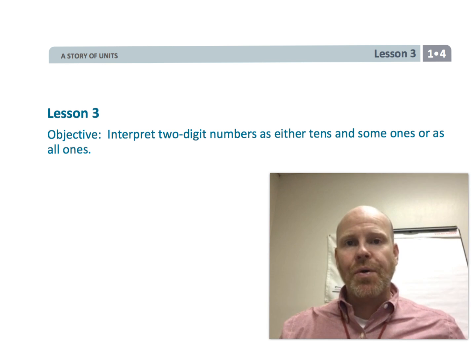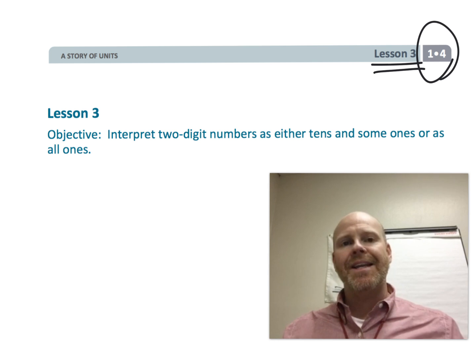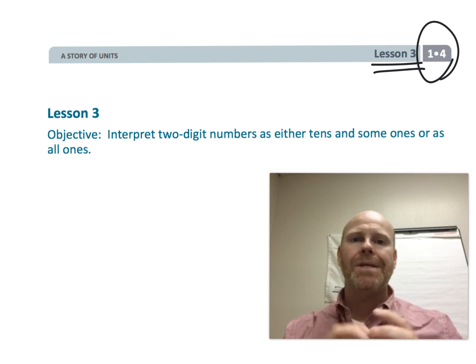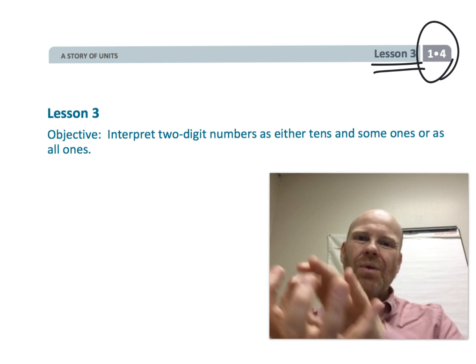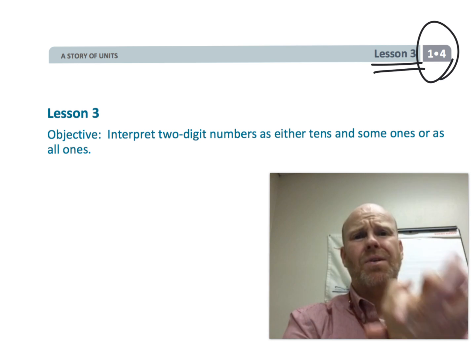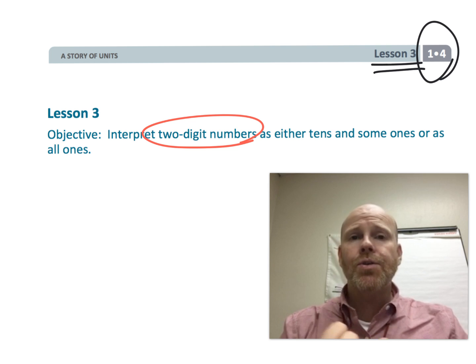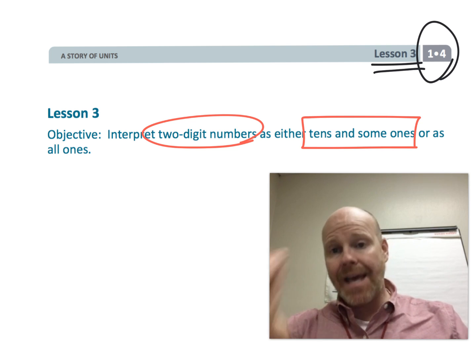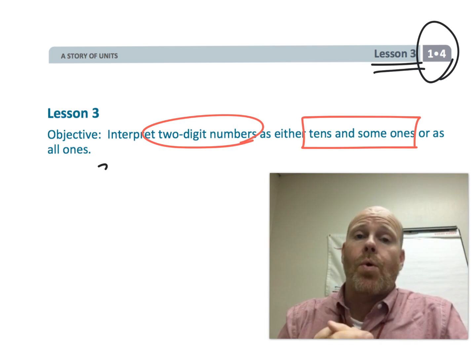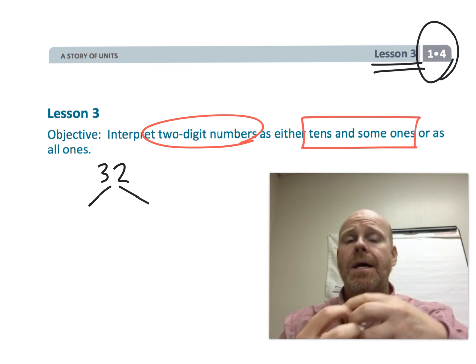This is first grade module 4 lesson 3. In this lesson, students are going to continue playing with all the different ways to represent a two-digit number. They're going to be thinking about a two-digit number as tens and some ones, or they're going to be thinking about it as just a bunch of ones.